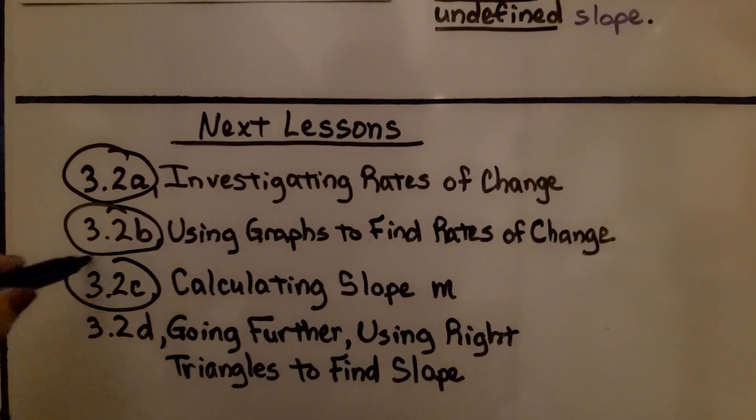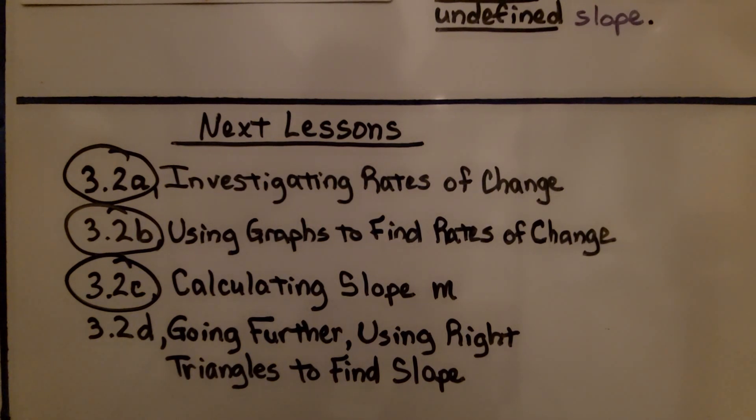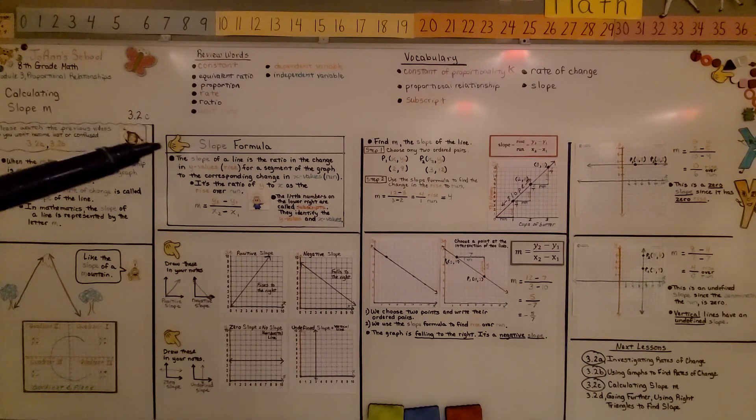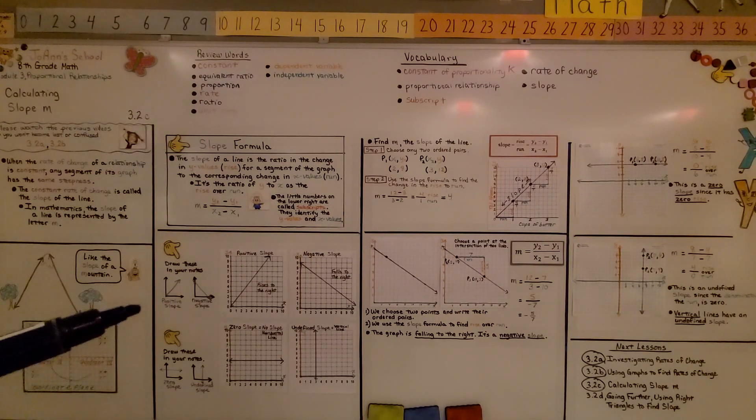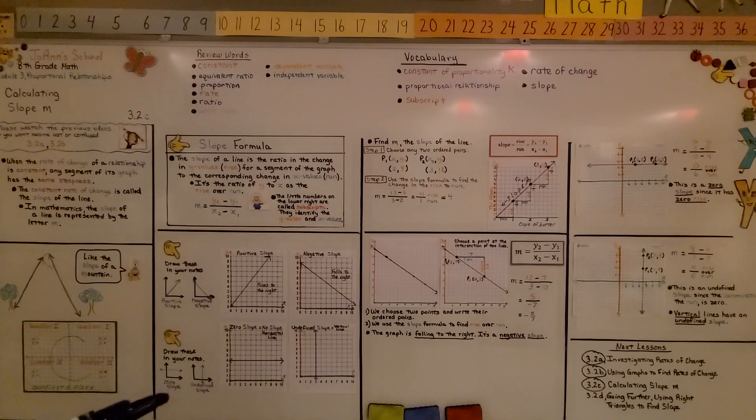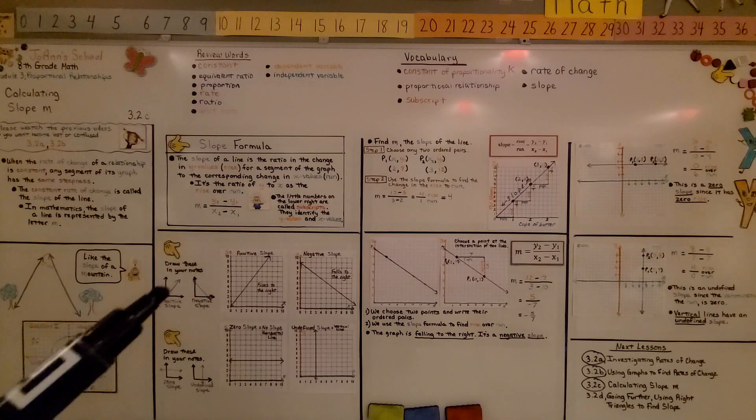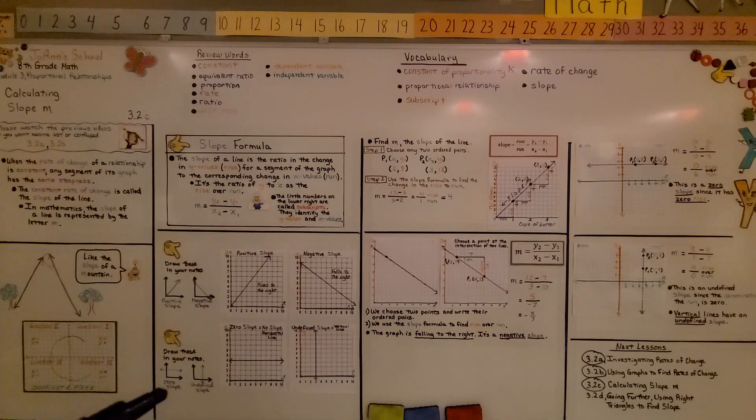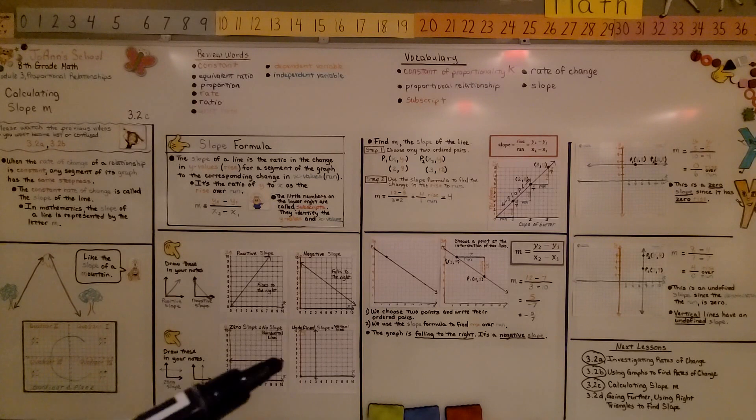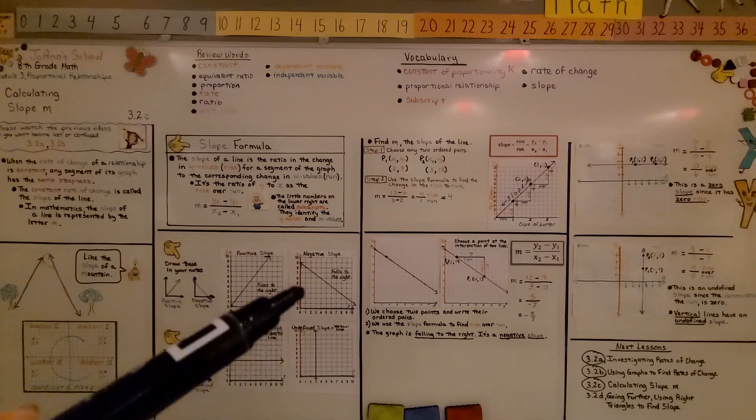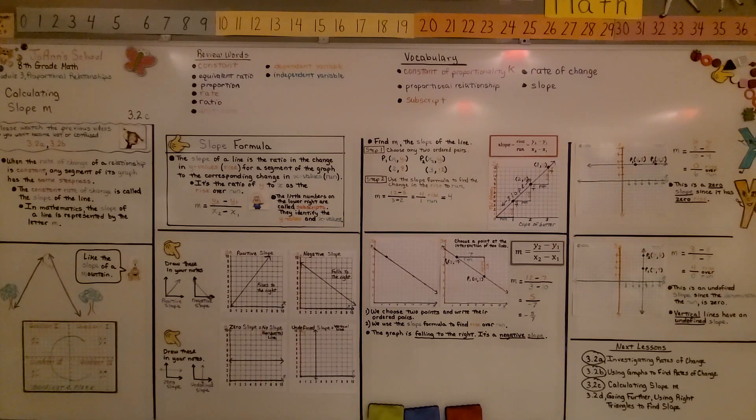We're finished with 3.2c. We're going to move on to the last part, which is going further after the lesson using right triangles to find slope. Make sure you add the slope formula to your notes and that you draw these four into your notes: a positive slope when it's rising to the right, a negative slope when it's falling to the right, a zero slope when it's horizontal, and an undefined slope when it goes vertical. Have a wonderful day, and please join me for the last part of the lesson.